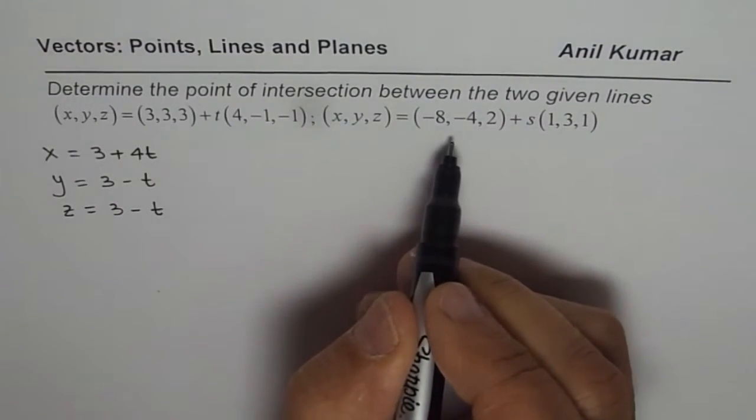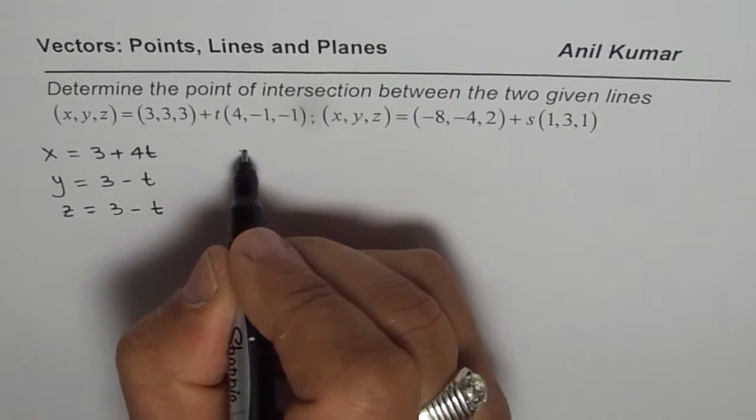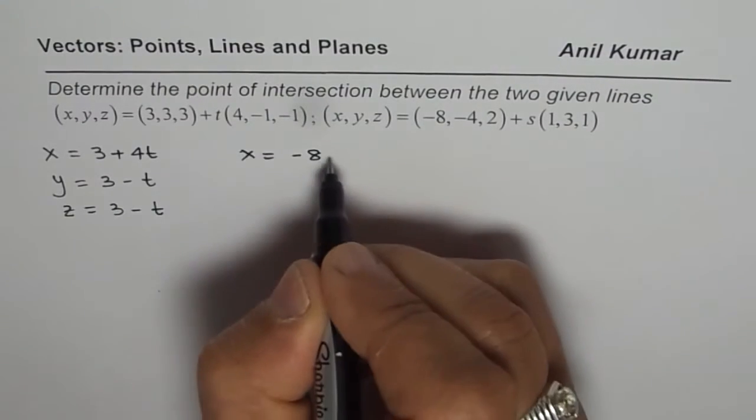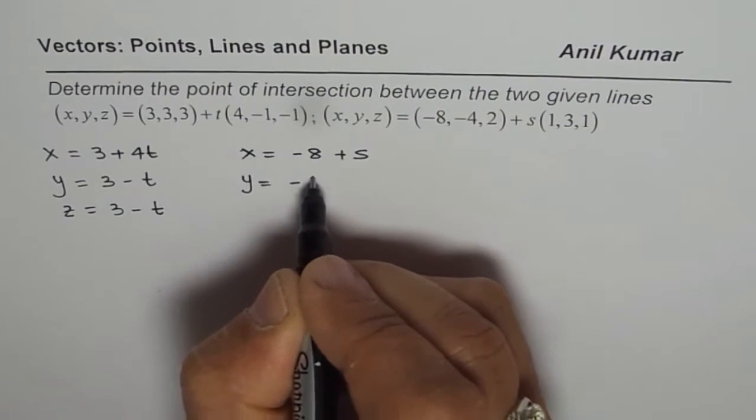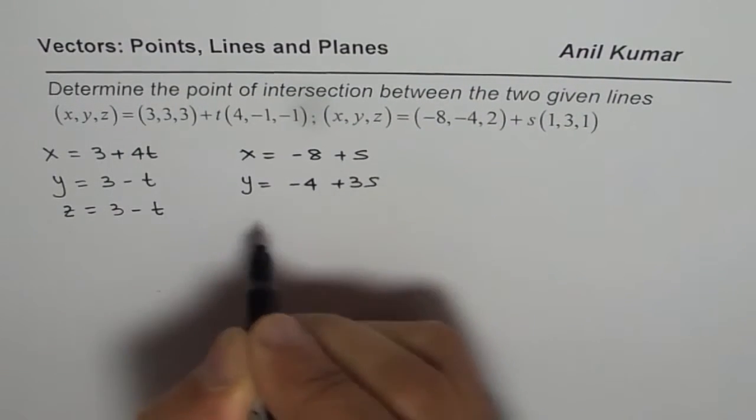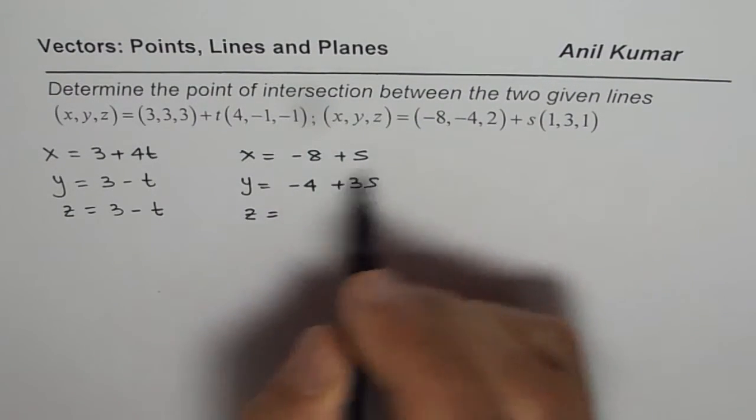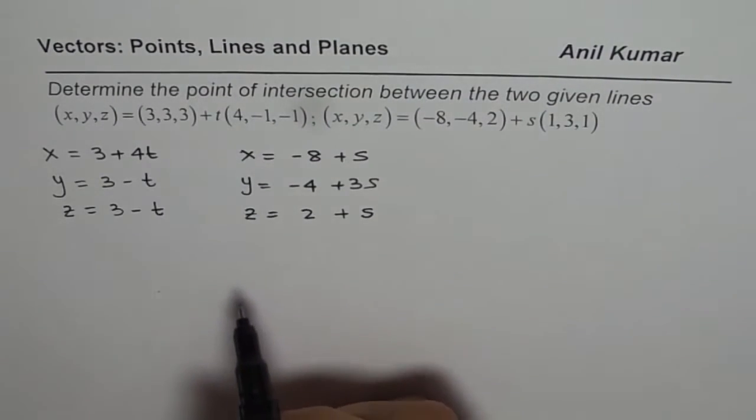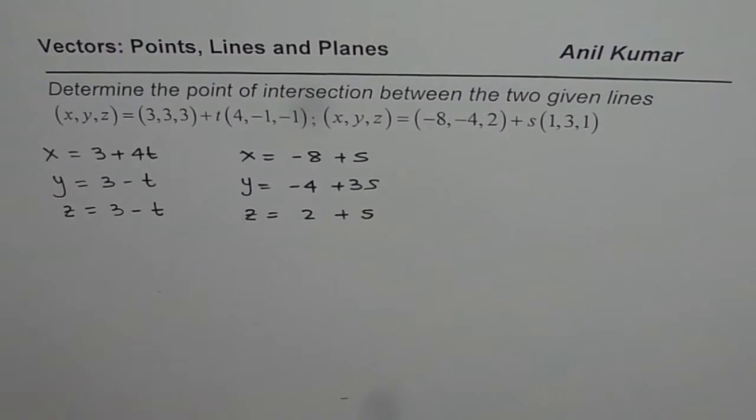For the second equation, what we get here is x is equal to minus 8 plus s, y is equal to minus 4 plus 3s, and z is equal to 2 plus s.